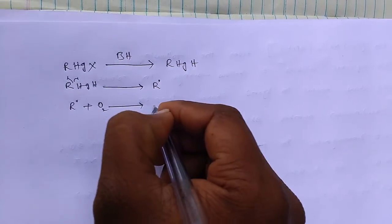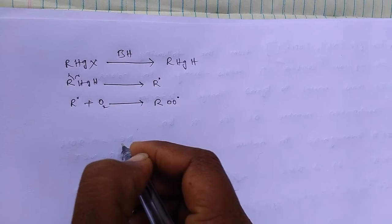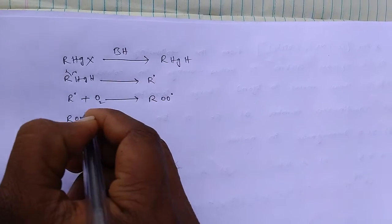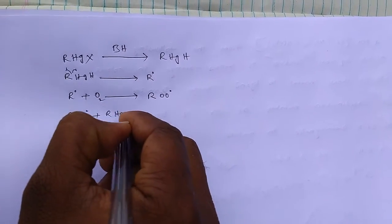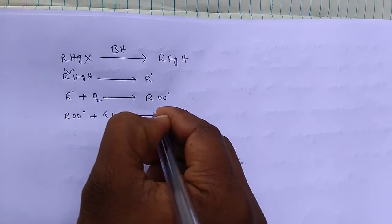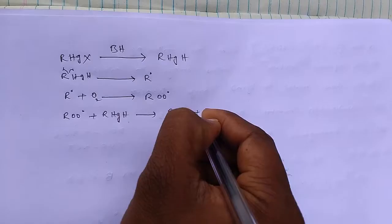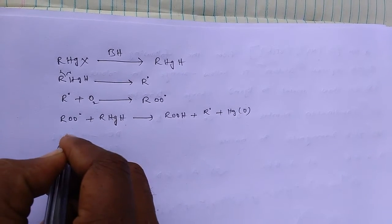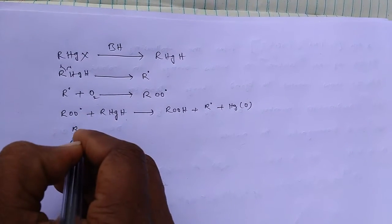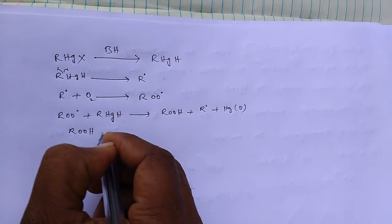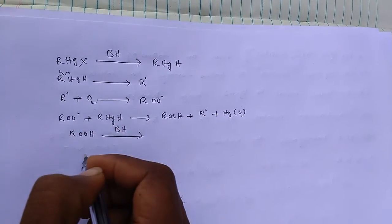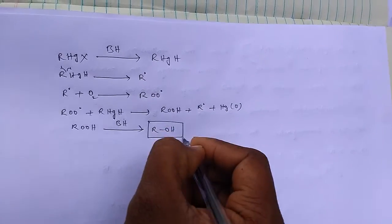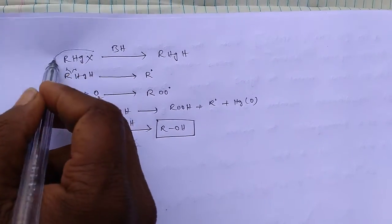Okay, by breaking here alkyl radical, this alkyl radical reacts with single molecule of oxygen or molecular oxygen and produces ROO radical. And this ROO radical reacts with another alkyl radical plus mercury.